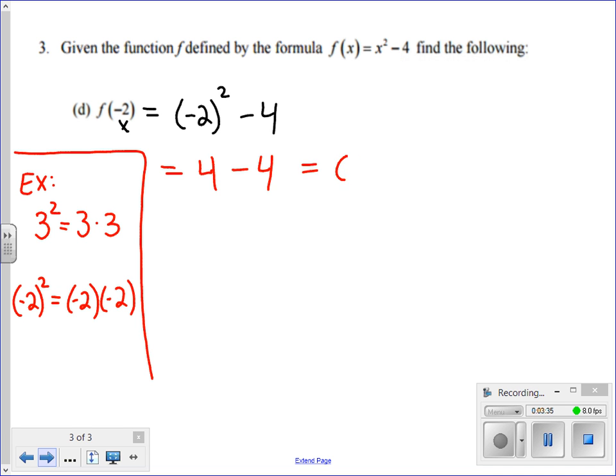Minus 4 equals 0. 0 is the output or the y value for this example. And your final answer is that when I put negative 2 in for x, I got 0 as the output for y.